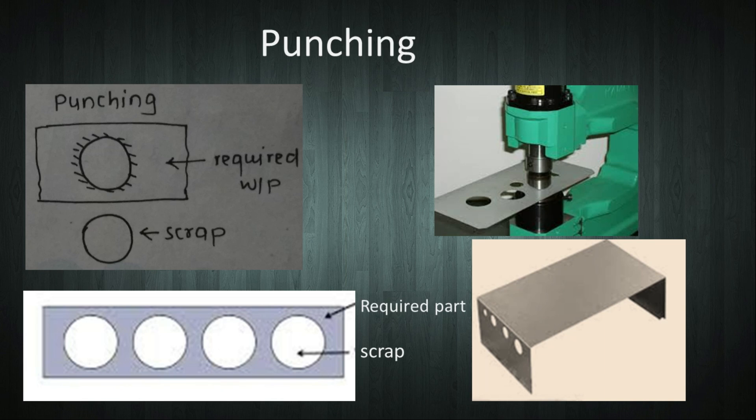The next operation is punching. Generally, it is named for producing circular holes. The material punched out is scrap, while the sheet metal with hole is the required workpiece.